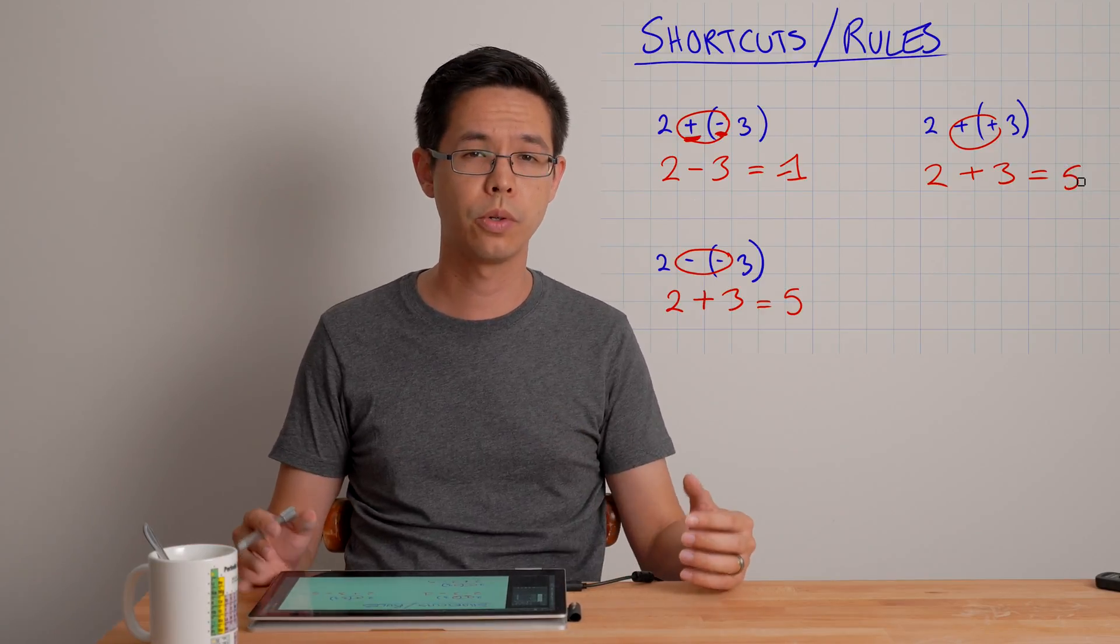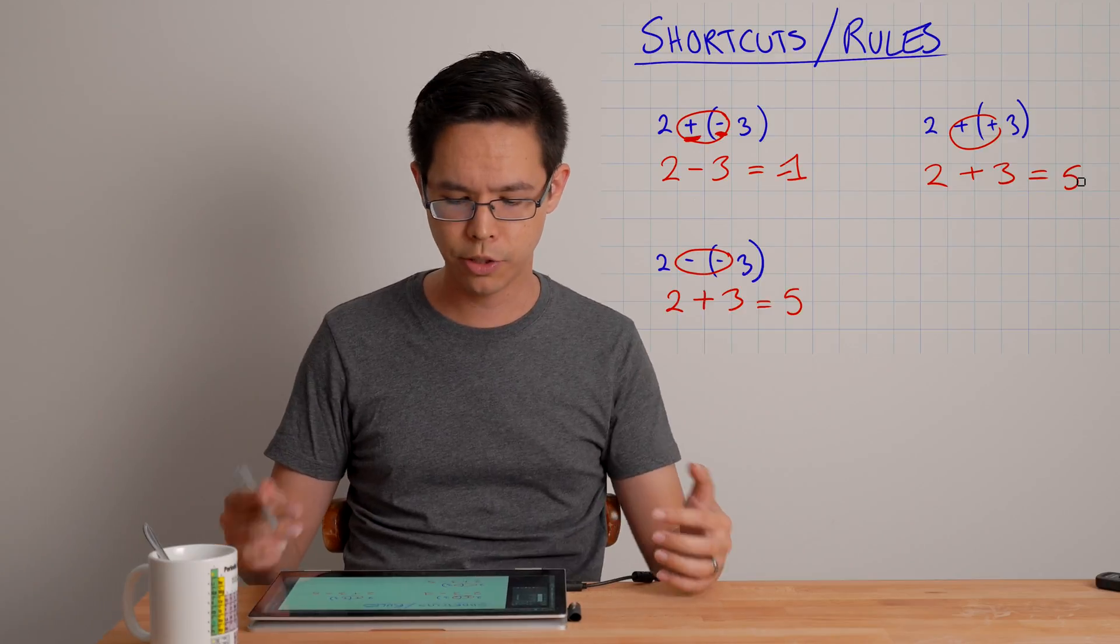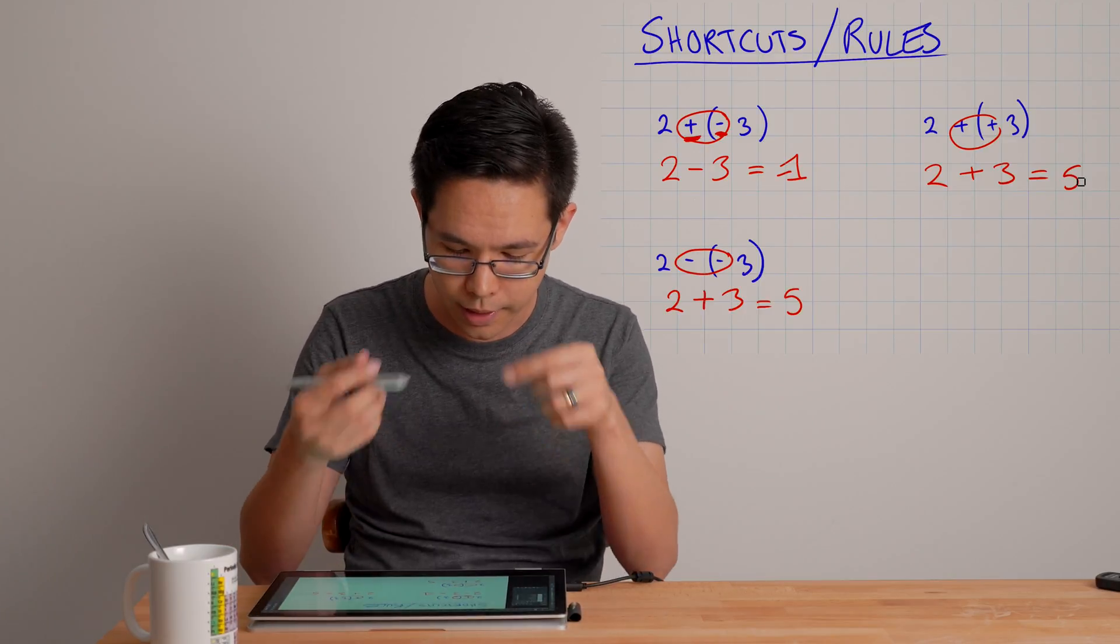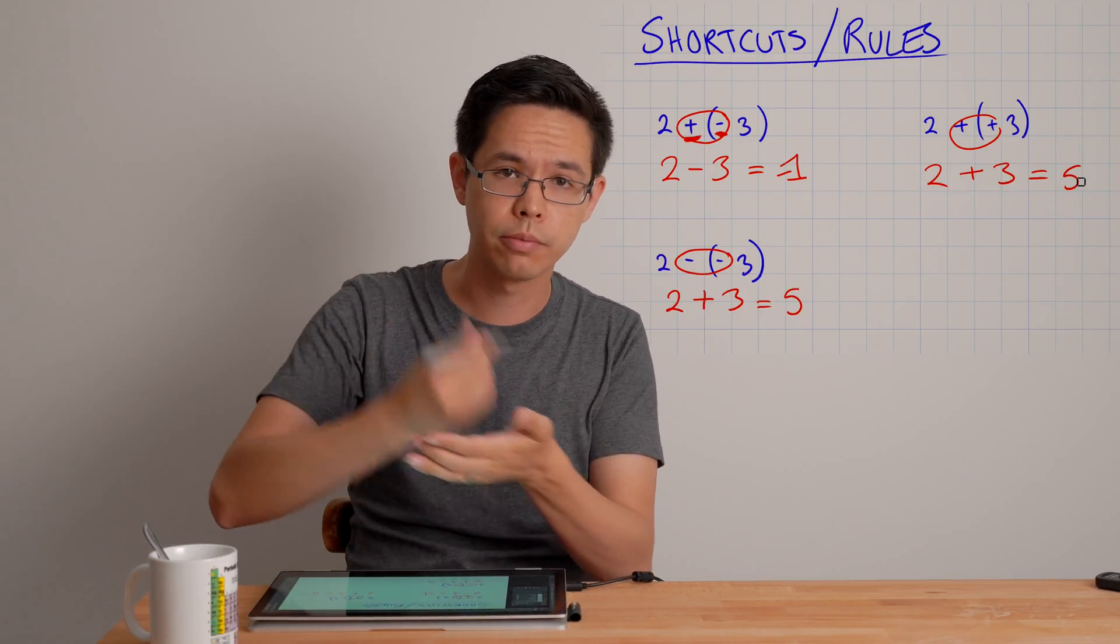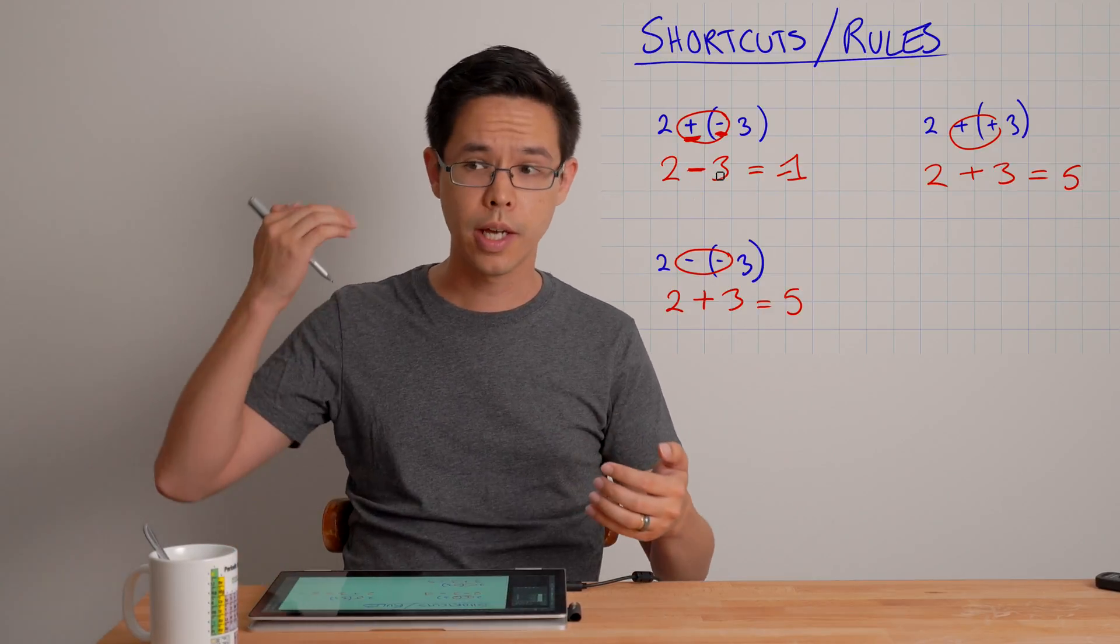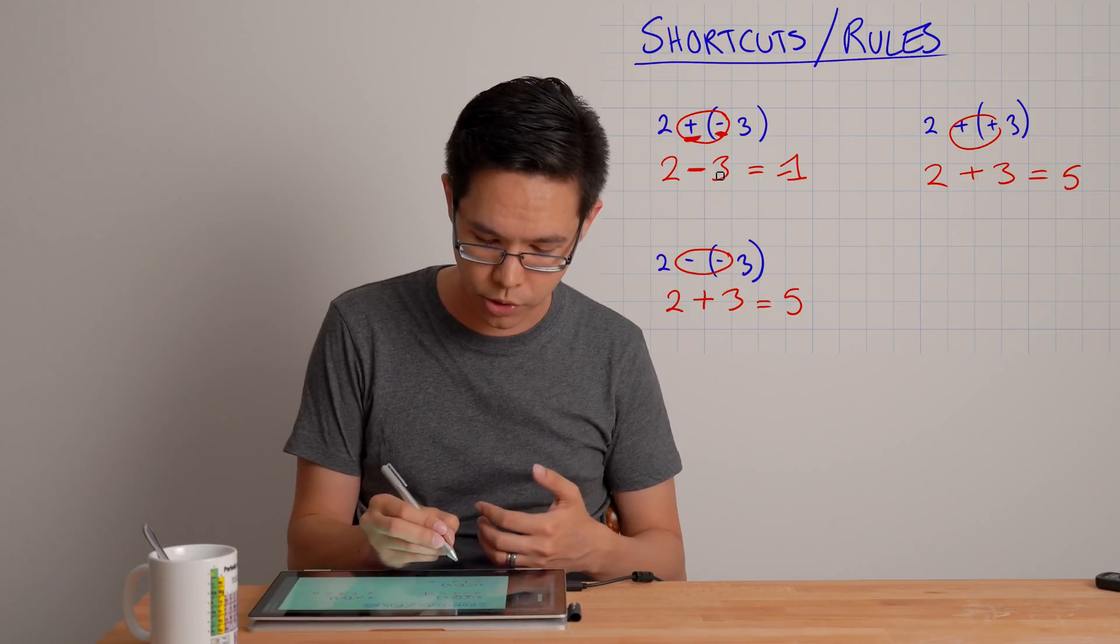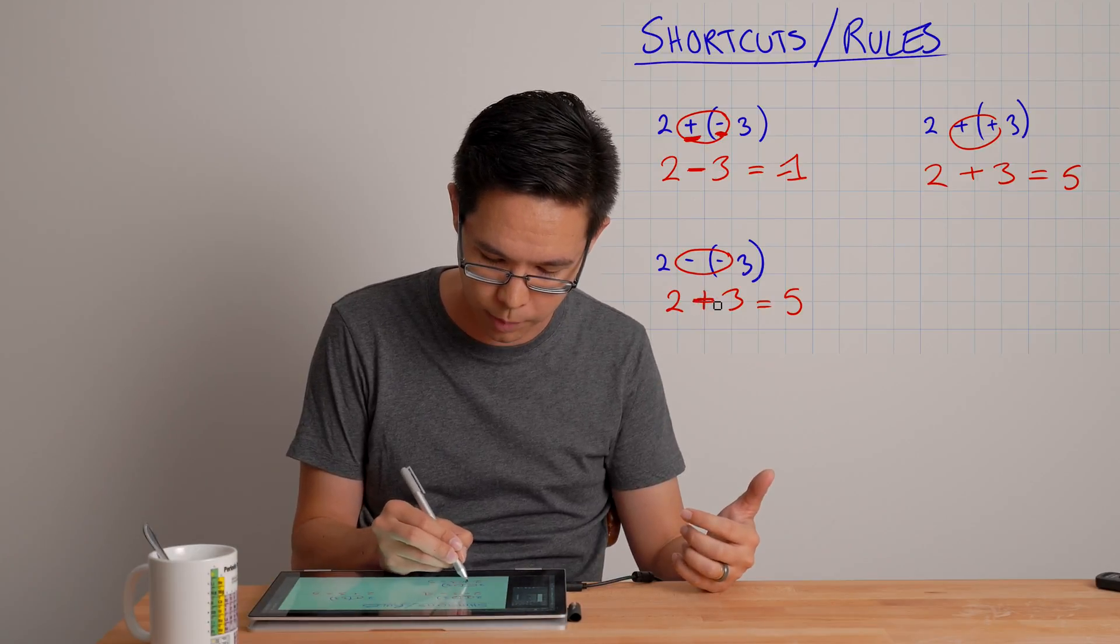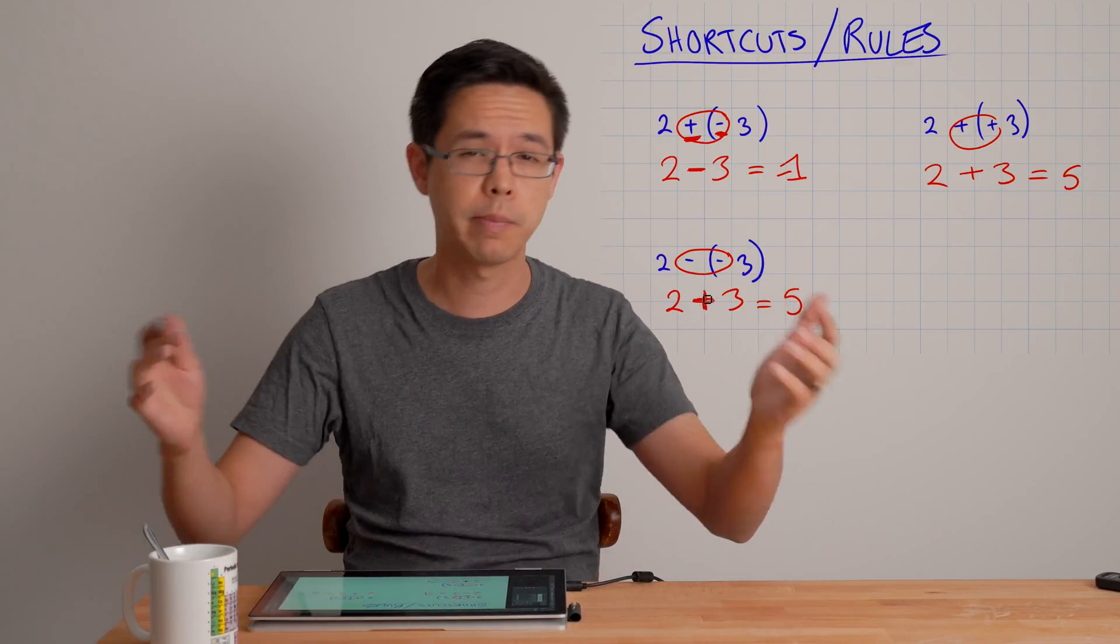So that's something you can apply to your adding and subtracting if you notice these things here. So adding a negative number, well the negative sort of overpowers and gets simplified to a negative. If you've got take away a negative number, well those two negatives will cancel each other out to become a positive. And that's basically the rule.